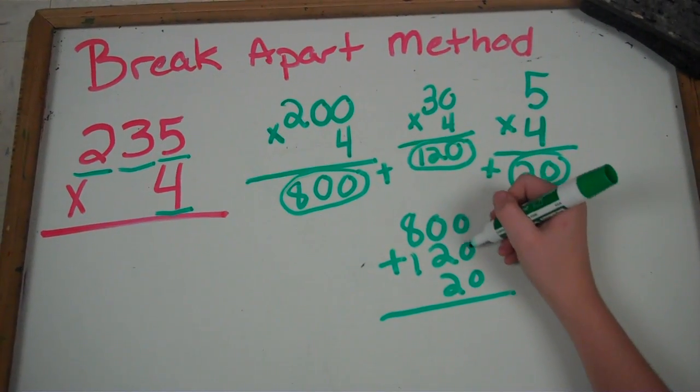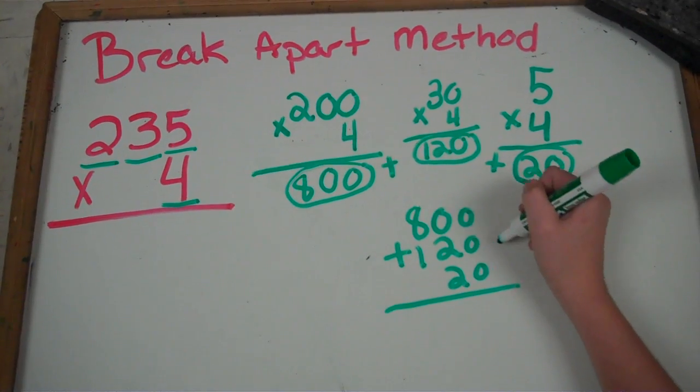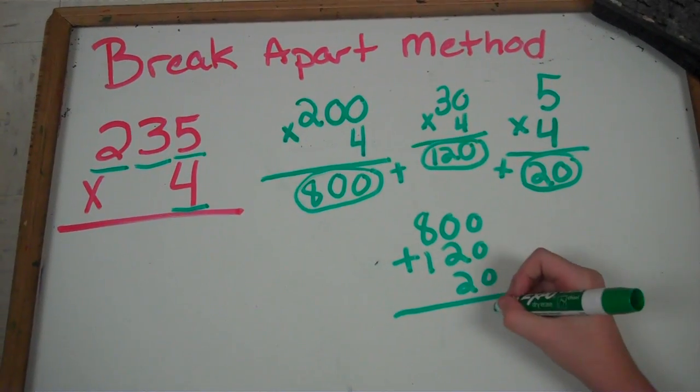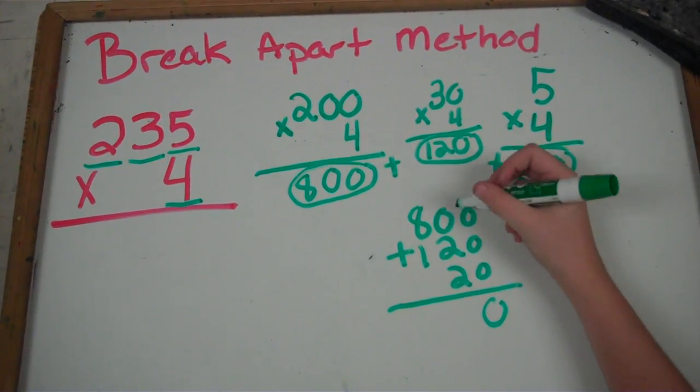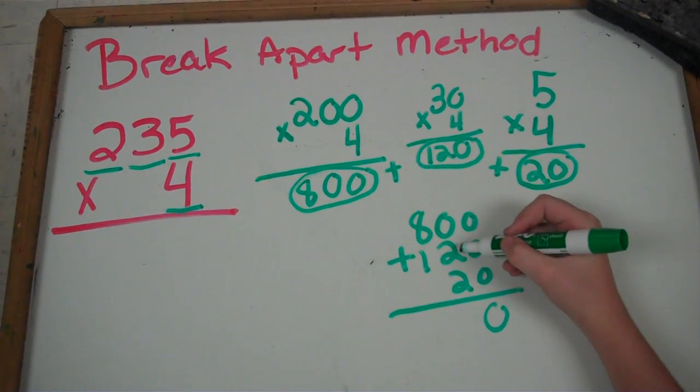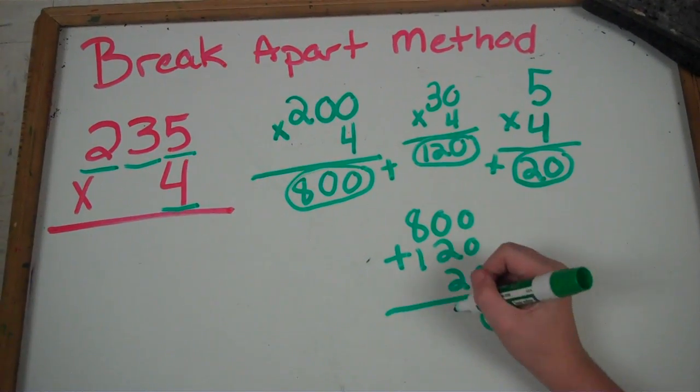So you have to do 4. Now 0 plus 0 is 0, plus the 0 from down here is 0. And then 0 plus 2 is 2 plus 2 is 4.